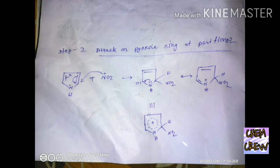The nitronium ion attacks on the C2 position of pyrrole and forms two resonating structures. Here you can see the positive charge takes part in resonance, and the last one is the hybrid structure of resonance.